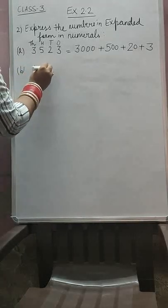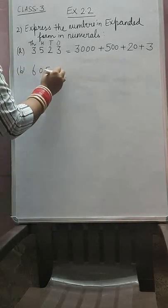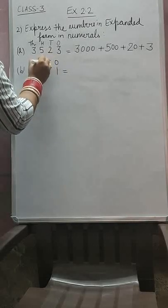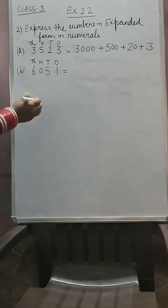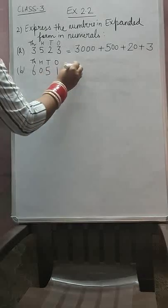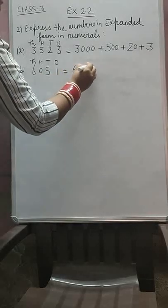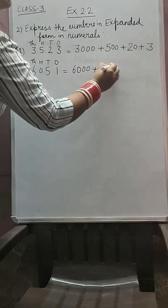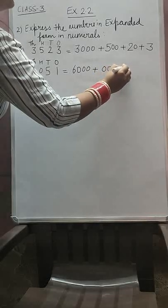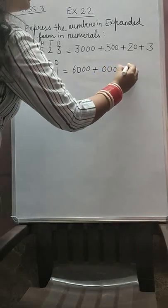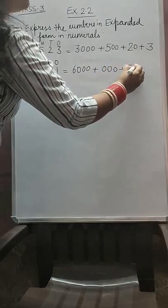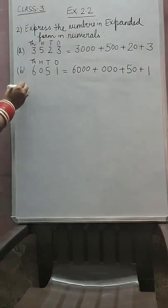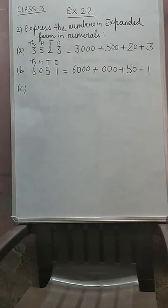Second part: 6, 0, 5, 1. This is 1, tens, 100, 1000. How many thousands we have? 6 thousands. How many hundreds we have? 0 hundreds — it means 0. How many tens we have? 50. How many ones we have? Only 1.